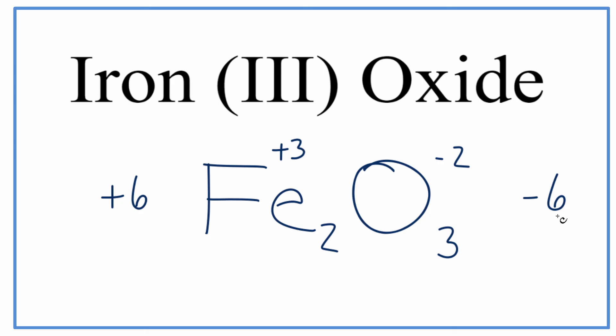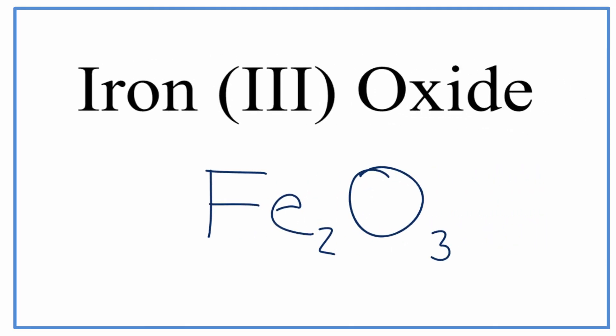And because of that, the net charge will be 0, and this is the correct formula for iron 3 oxide. Let's clean things up a bit, and we're done.